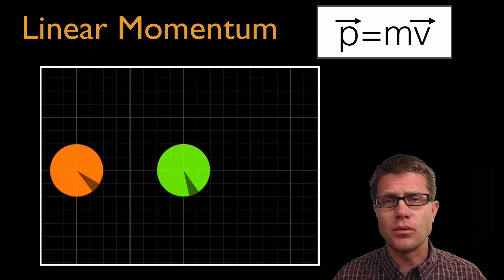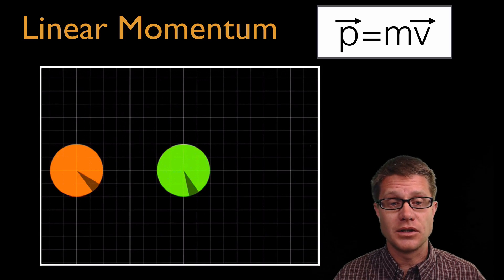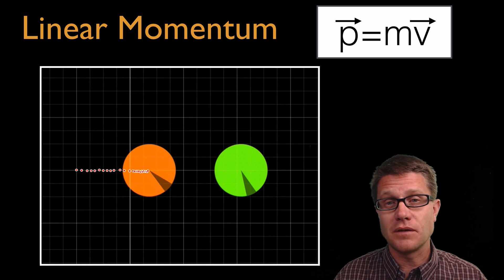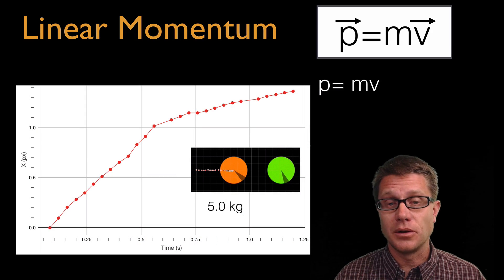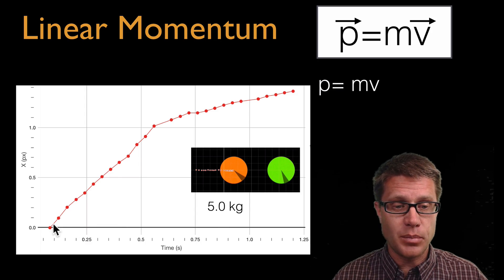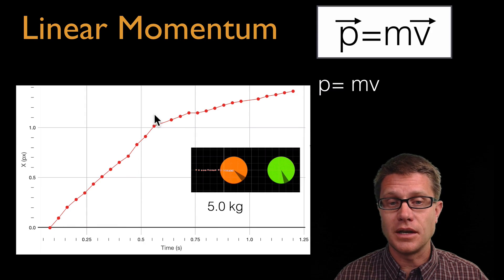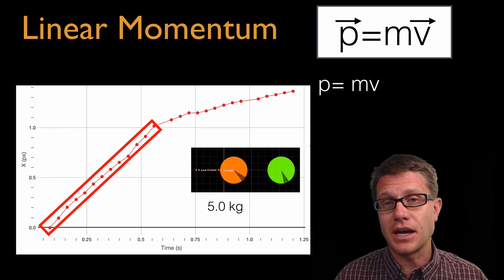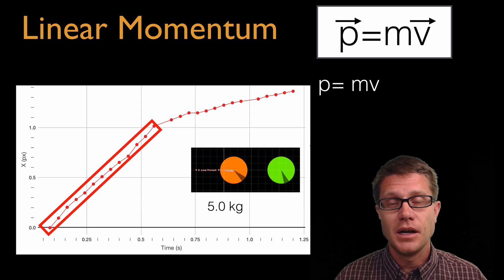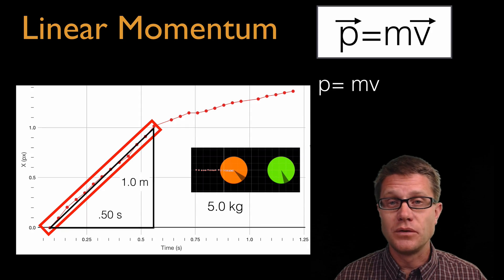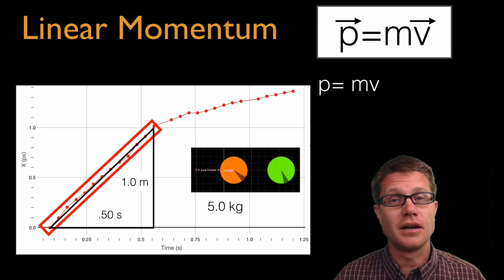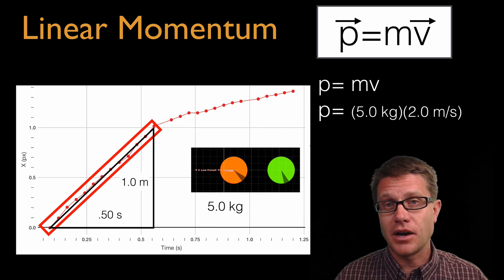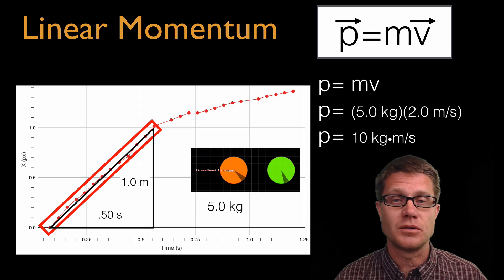Now let us watch the orange sphere. How much momentum did it have before the collision? Using video analysis we can graph the position of that sphere at different times. We get a curve showing constant velocity before the collision and then a change after. Calculating the velocity during that period — rise over run — it moves 1 meter in 0.5 seconds, giving a velocity of 2 meters per second. So the momentum is 5 kilograms times 2 meters per second, which is 10 kilogram meters per second.